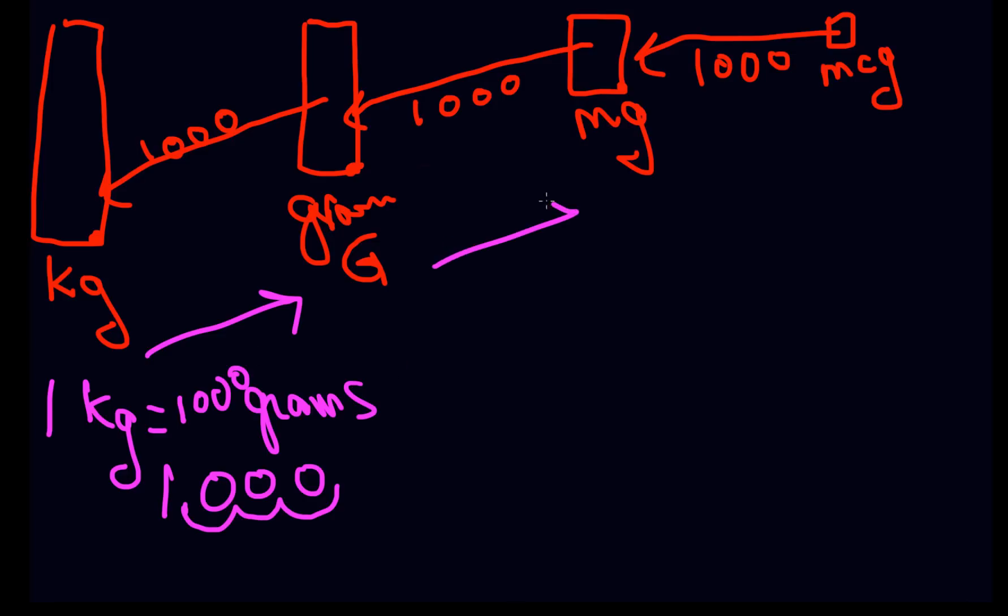Same thing for grams to milligrams. You have one gram, and you're moving your decimal point to the right because you're getting smaller. And you have one gram. There's your one gram, and you're moving your decimal point one, two, three places, and that equals 1,000 milligrams.